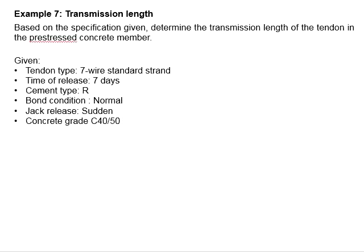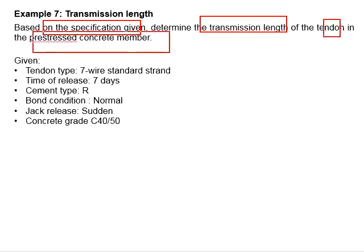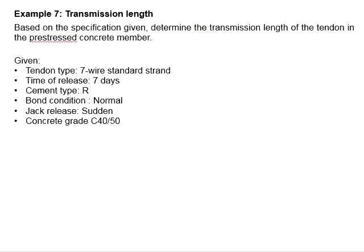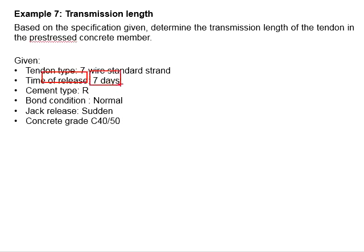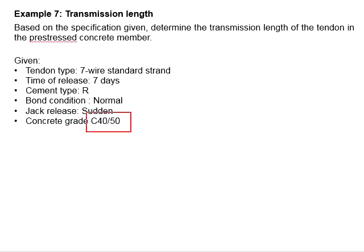Let us try an example to determine the transmission length of the tendon in a pre-stressed concrete member. Based on the specification given, determine the transmission length of the tendon. The tendon used is 7-wire standard strength. The pre-stressing load is released on day 7. Cement type R is being used. The bond condition is considered as normal. The jacks are released suddenly. The concrete grade is C40.